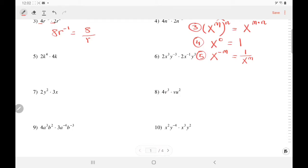Number 5: Again, multiply 2 and 4 to get 8. There is an invisible 1 here, so add the exponents, 4 and 1, to get 5.